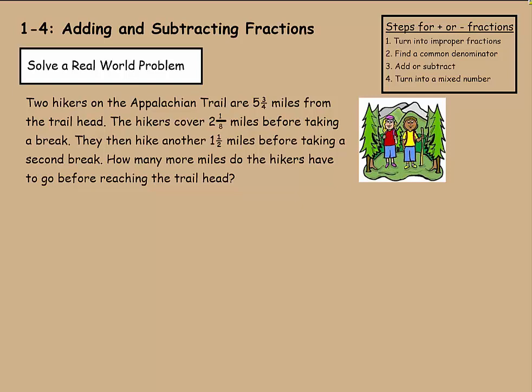Now we can solve a real-world problem. It says two hikers on the Appalachian Trail are 5 and 3/4 miles from the trailhead. The hikers cover 2 and 1/8 miles before taking a break. They then hike another 1 and 1/2 miles before taking a second break. How many more miles do the hikers have to go before reaching the trailhead? There's a number of different ways you can solve this one. But first, let's just wrap our mind around it. They are this many miles away, and they've approached it already by going this far and this far. So what we can do is we can add the total amount that they've hiked already and then we could subtract that from the total distance they have to go and we'll find out how much more they have to go.